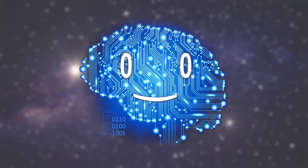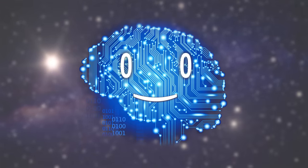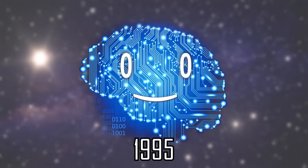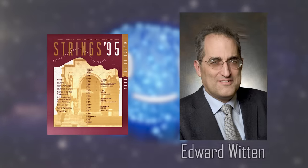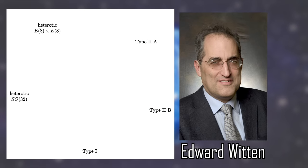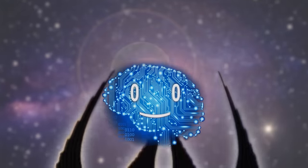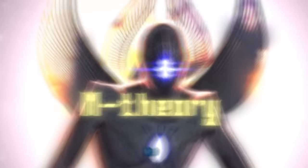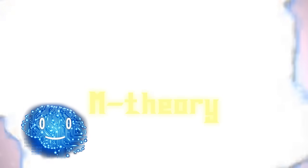We have these several theories, but which one is right? It wasn't until 1995, when at a string theory conference, physicist Edward Witten suggested that the five string theories were small portions of one bigger and more complete string theory. He called this ungodly amalgamation the M-theory.